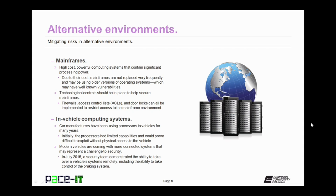Finally, we have in-vehicle computing systems. Car manufacturers have been using processors in vehicles for many years. Initially, the processors had limited capabilities and could prove difficult to exploit without physical access to the vehicle. Modern vehicles are coming with more connected systems that may represent a challenge to security. As a matter of fact, in July 2015, a security team demonstrated the ability to take over a vehicle's systems remotely, including the ability to take control of the braking system and the ability to accelerate — and they did this from approximately 10 miles away. At this point in time, I am unaware of any mitigation technique for this risk.